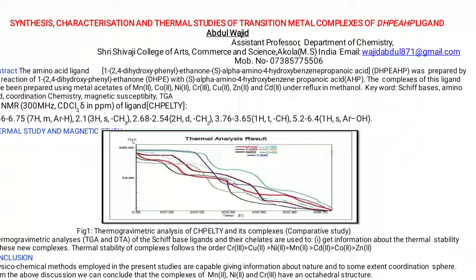can be prepared by condensation with certain metals such as manganese, cobalt, nickel, chromium, copper, zinc and cadmium under reflux conditions in methanol, i.e., an alcoholic medium. Key terms used in this presentation include Schiff base amino acids, and we will particularly study TGA — thermogravimetric analysis — and magnetic susceptibility data, with the main focus on thermogravimetric analysis.